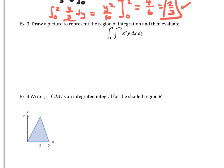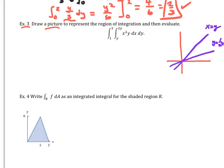Example 3 is a bit different because it has variable limits, and it also asks us to draw a picture representing the region of integration. This is different from before — we're finding the base over which we'll build the volume. This is dx on the inside, so the limits x = y and x = 2y are the inner bounds.